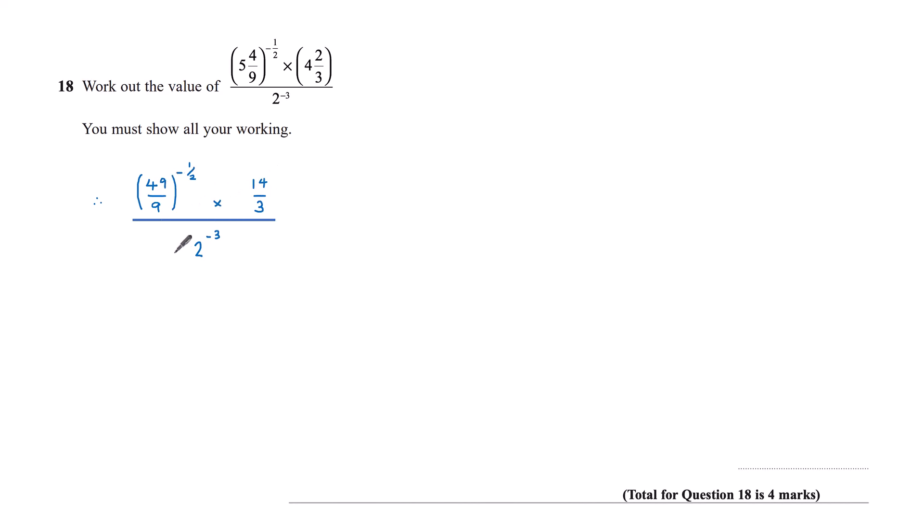Now that we've converted those into improper fractions, let's deal with these negative powers. Now if something is raised to the power minus 1, that's the same as its reciprocal. And so 49 over 9 to the minus a half is the same as 9 over 49 to the power of a half. This is still times 14 thirds.